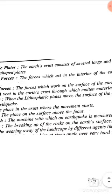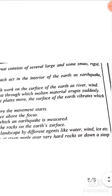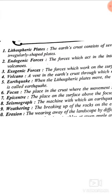First of all, let's come to the Key Points. Earth's crust consists of several large and some small, rigid, irregular-shaped plates. These are very large and irregular — meaning they have no fixed shape or size. These are called Lithospheric Plates.